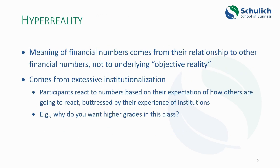The underlying social theory that Vollmer draws on here is the notion of hyperreality, which comes from French scholar Jean Baudrillard. In this notion of hyperreality, the meaning of financial numbers comes not from some underlying objective reality that people say it measures, but from the relationship with other financial numbers. We've already used this in class by creating ratio calculations and comparing one side of the balance sheet to another. The meaning of numbers comes from their relationship to each other, and this takes on a new characteristic in accounting because of the excessive institutionalization of accounting.